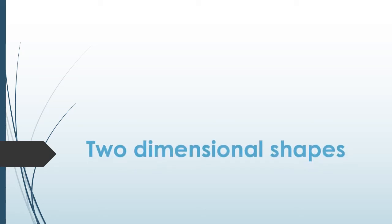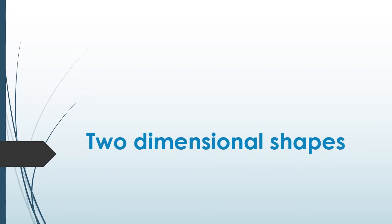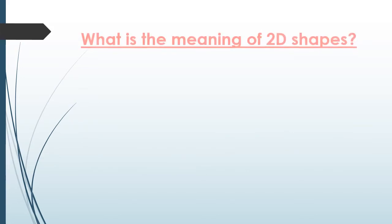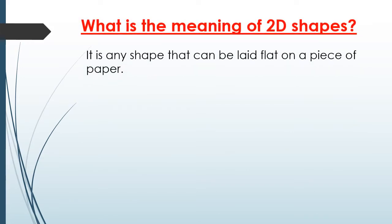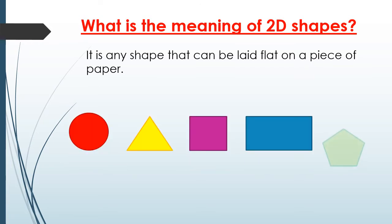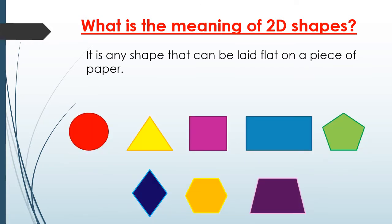Good morning Primary 2. Today we are going to talk about two-dimensional shapes, or 2D shapes. What is the meaning of 2D shapes? It's any shape that can be laid flat on a piece of paper. If you can remember these shapes, today's session will be very easy.